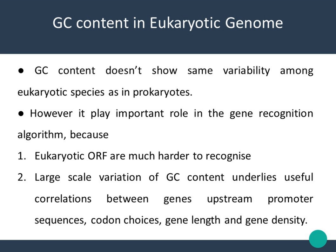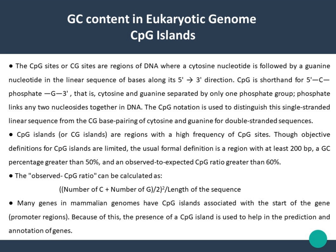Overall genomic GC content does not show the same variability between eukaryotic species as is observed in prokaryotes. It does seem to play a much more important role in gene recognition algorithms for at least two reasons: one, eukaryotic open reading frames are much harder to recognize, and two, large-scale variation of GC content within eukaryotic genomes underlies useful correlations between genes and upstream promoter sequences, codon choices, gene length, and gene density.